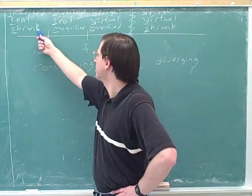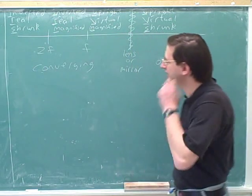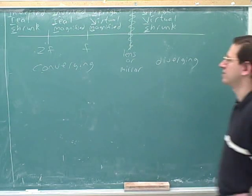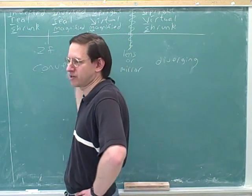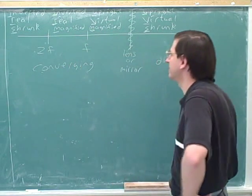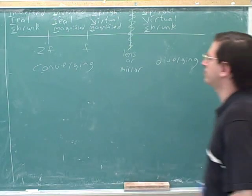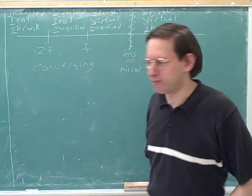For remembering shrunk versus magnified: the two M's are in the middle of the diagram and the two S's are on the sides. So S for side and M for middle. We're going to keep referring to this diagram as we go through the problems.